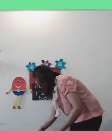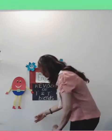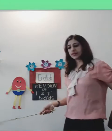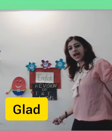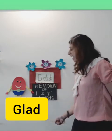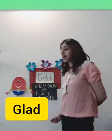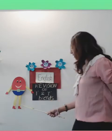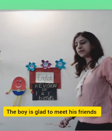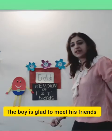Now we move on to the next word. What sound does this letter make? G. And this letter? L. And together we hear the sound 'gl'. So now let's form a word and a sentence. 'Gl' and 'ad' makes glad. What do you mean by the word glad? It means happy. The boy is glad to meet his friends.